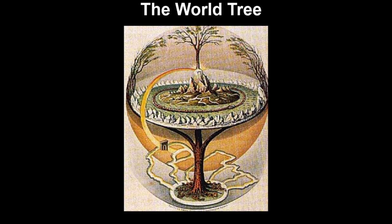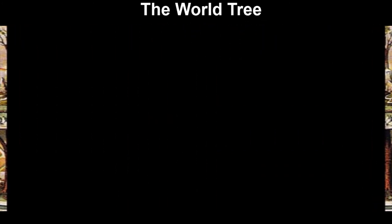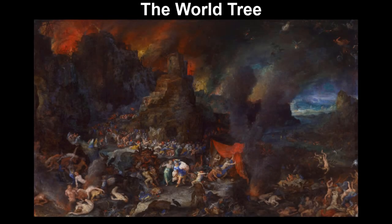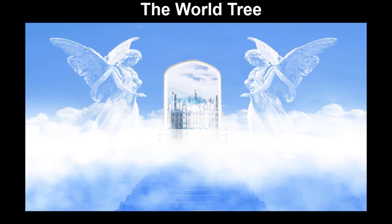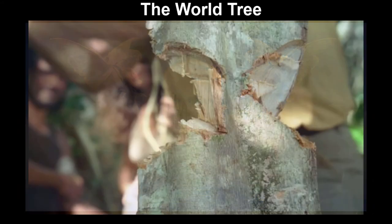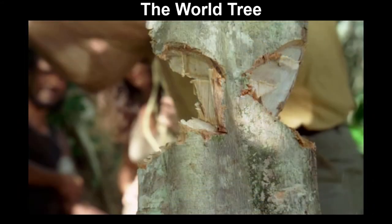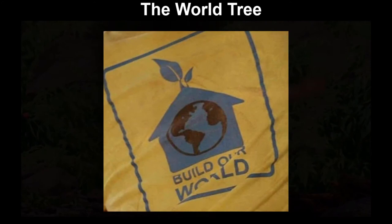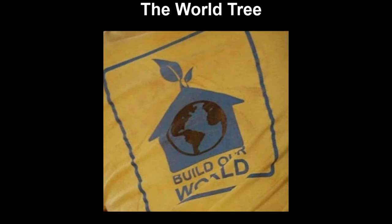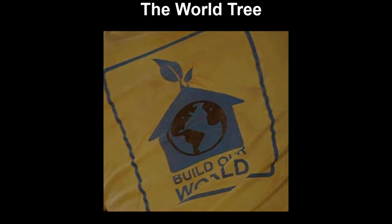One of the most common symbols of the Axis Mundi is known as the World Tree, or Yggdrasil. The roots of the tree represent the underworld, the trunk of the tree is our world on earth, and the branches of the tree represent the realm of the gods. Cutting down or destroying the tree represents some cataclysmic event, and is followed by the building of a new world. Note that Sayid works for an organization called Build Our World, symbolized by a tree growing out of the top of a home — our planet Earth.